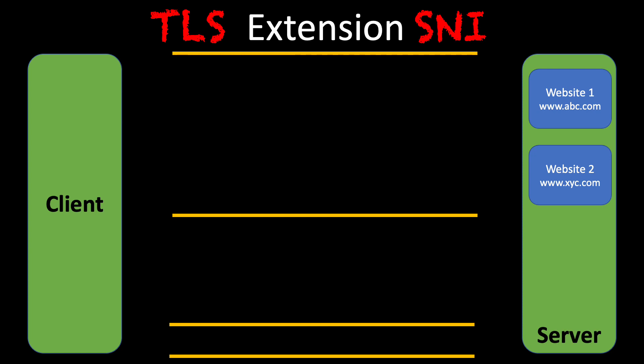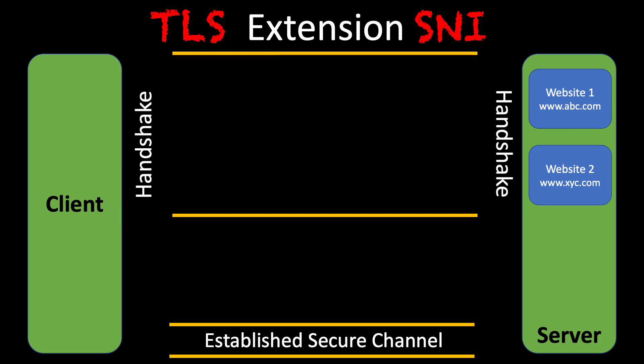On the right hand side, our server is hosting multiple websites, and on the left hand side we have our client that wants to talk to the server. In this specific case, we want to be talking to the abc.com website. As we know from previous TLS sessions, the TLS session is broken down into multiple sections: the handshake part, the finishing part, and the established secure channel where we're encrypting traffic back and forth.